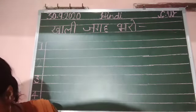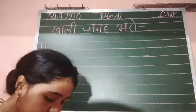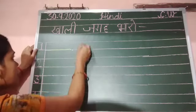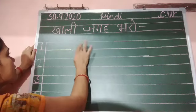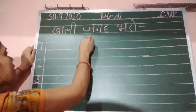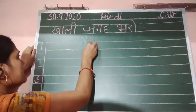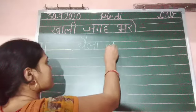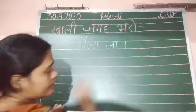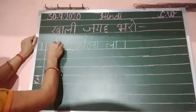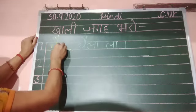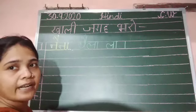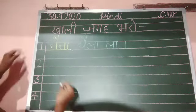Number 1 is — look here at the first blank. 'La par aa ki maatra' — la, la. So the answer is: 'na par aa ki maatra' — na, na. The word is थैला (thaila). Write it down, then leave one line.